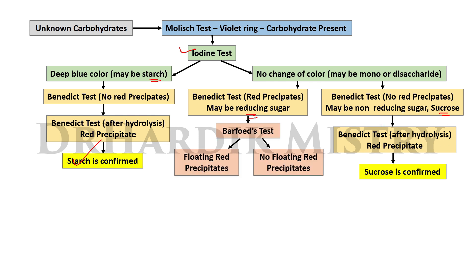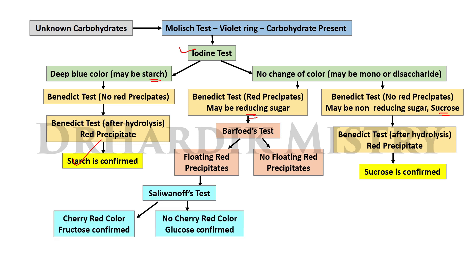In the Benedict's test, if red precipitates are observed, this may be due to a reducing sugar. Perform the Barfoed's test. If you are seeing floating red precipitates, go for the Seliwanoff's test. If cherry red color is observed in the Seliwanoff's test, then fructose is confirmed.